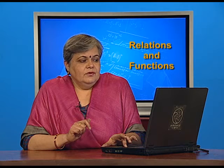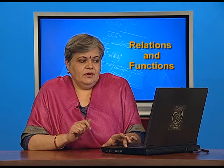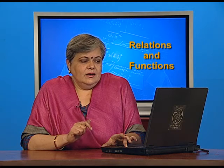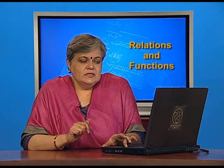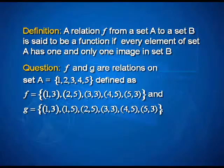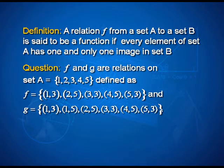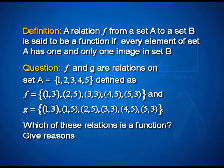Suppose I have a relation F and a relation G defined on set A. Set A has five elements 1, 2, 3, 4 and 5, and the two relations are defined as lists of ordered pairs F and G, both being given. Which of these relations is a function? You also have to give reasons.